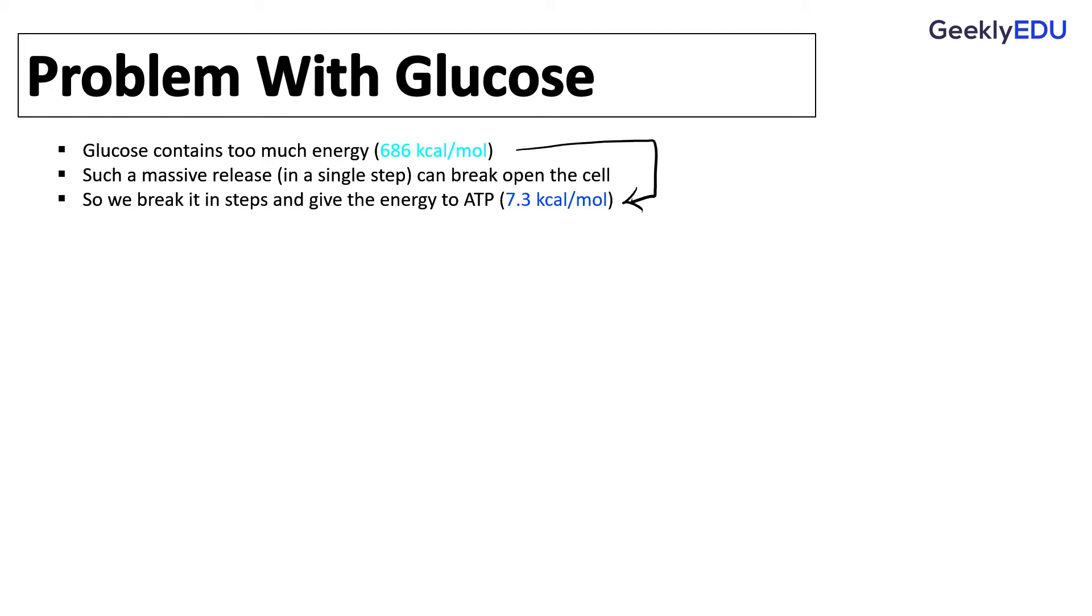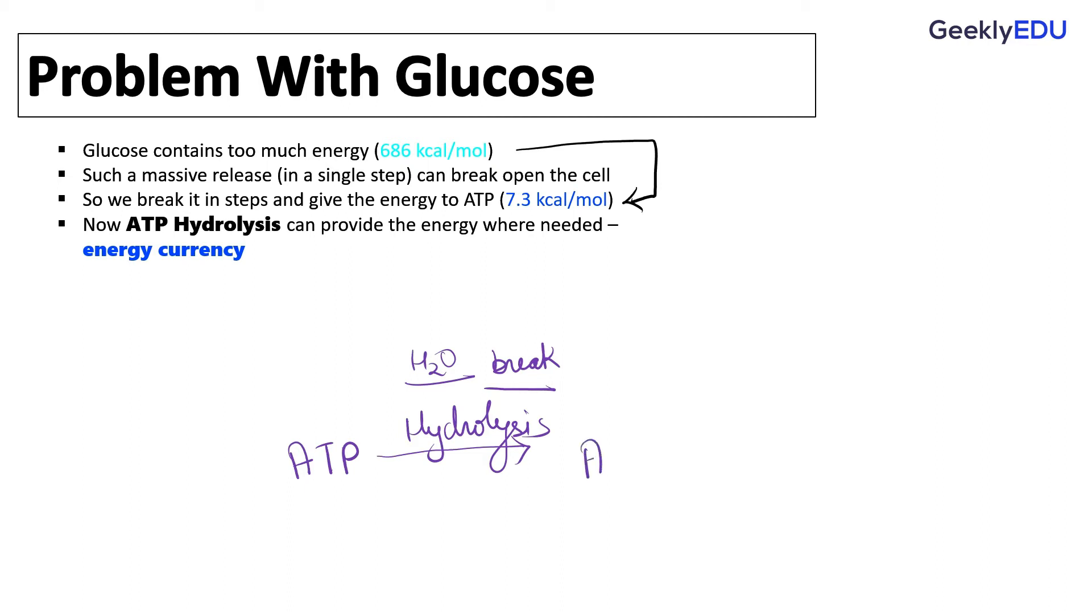And then you break this ATP, adenosine triphosphate, three phosphates, with the help of water hydrolysis. Always with water. Lysis means breaking. Hydro means in presence of water. You are breaking this, and you are pulling one phosphate apart, and that is one thing that is causing the net release of 7.3 kilocalories per mole.